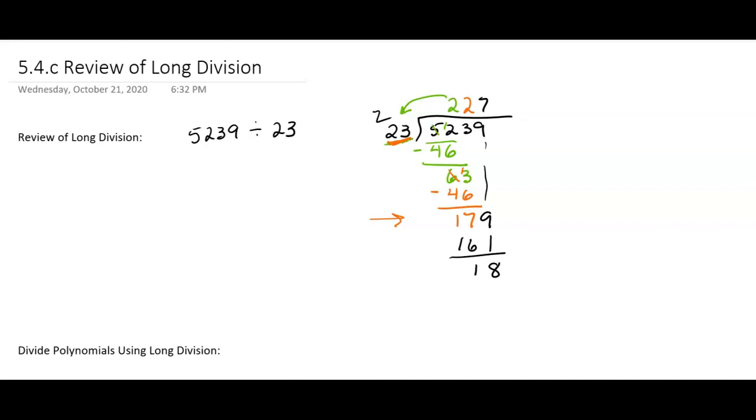process, hopefully. And I know sometimes students don't remember how to do long division or maybe they were absent that day in school or something. But when we did this division, our answer, our quotient, would be 227, and then you would put the 18 over the divisor, 18 twenty-thirds, something like that.